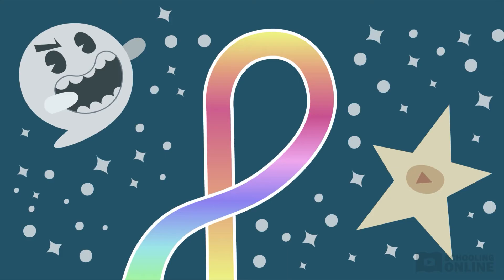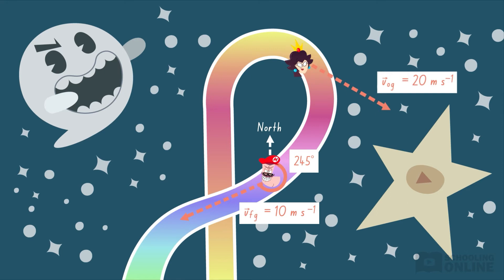After exiting the first turn on his third lap, Markio bumps into a fence and slows down to a velocity of 10 metres per second at a bearing of 245 degrees. Meanwhile, Princess Lotus is keeping a close second place. She races around the corner with a velocity of 20 metres per second at a bearing of 120 degrees.